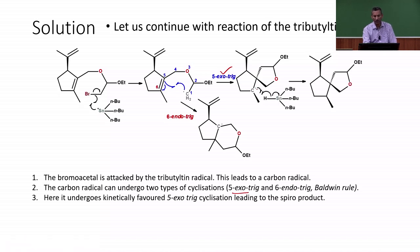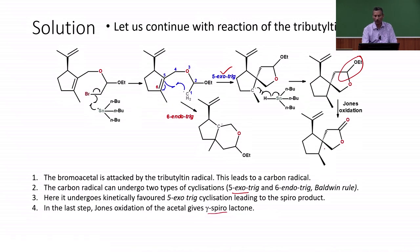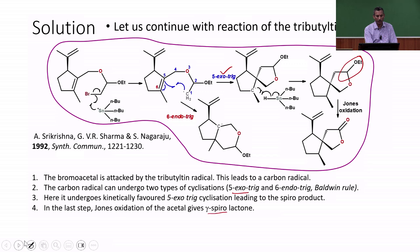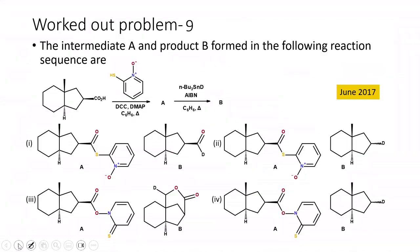The spiro radical is quenched by a hydrogen atom from tributyltin hydride, giving the saturated carbon. The ethyl ether is then oxidized by Jones reagent to give the γ-spirolactone as the final product. When we oxidize the intermediate, we end up with the γ-spirolactone. This reaction was used in a paper by Professor A. Sree Krishna. Let us move on to the next problem.